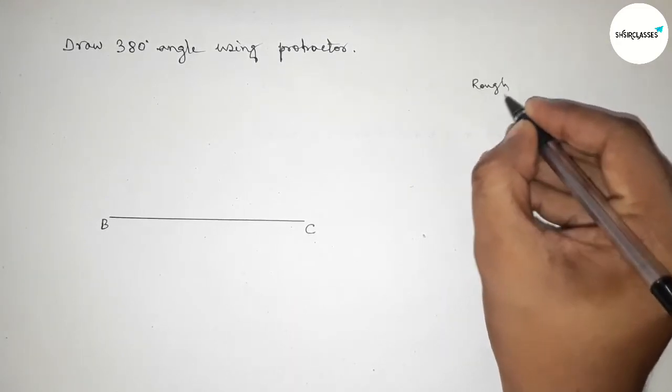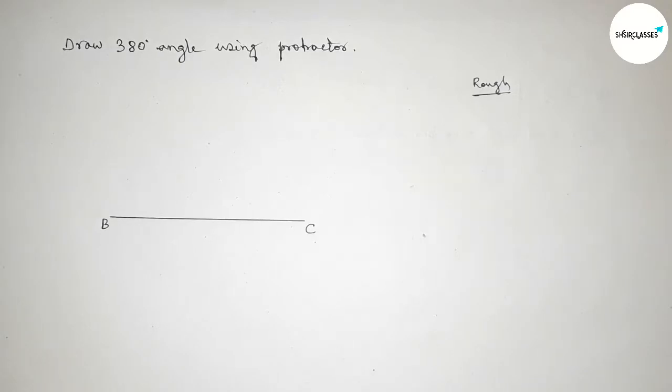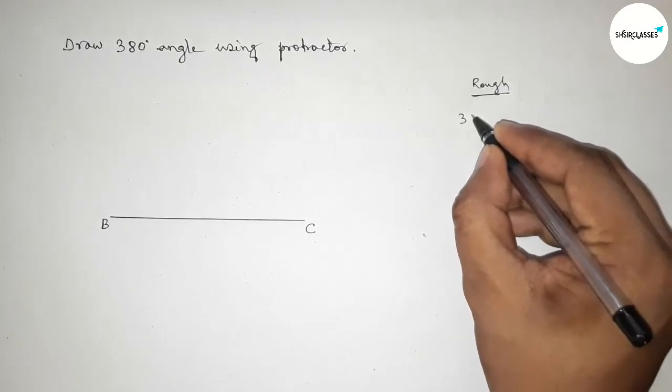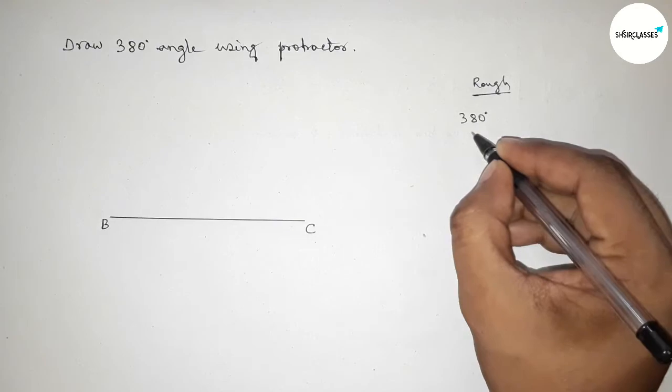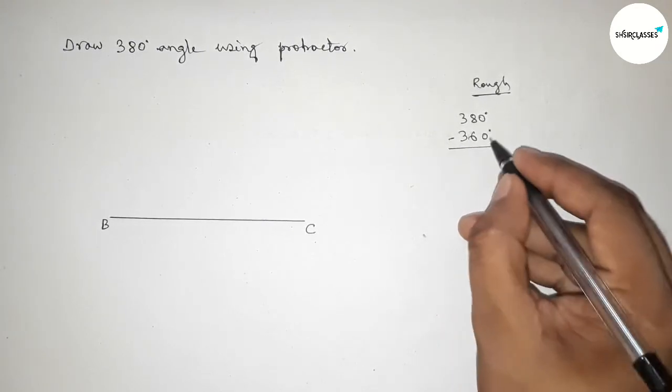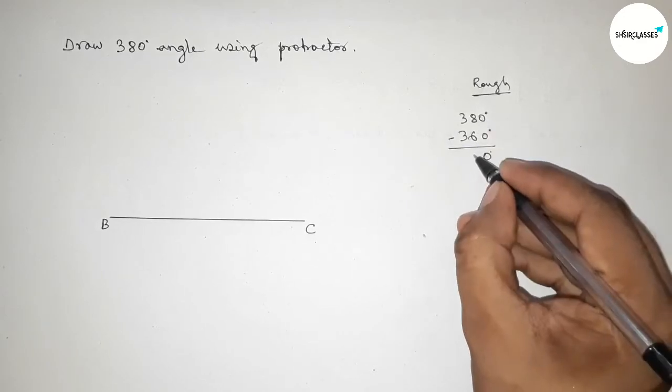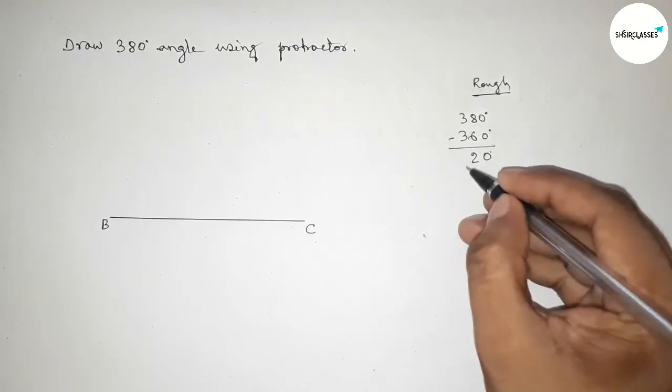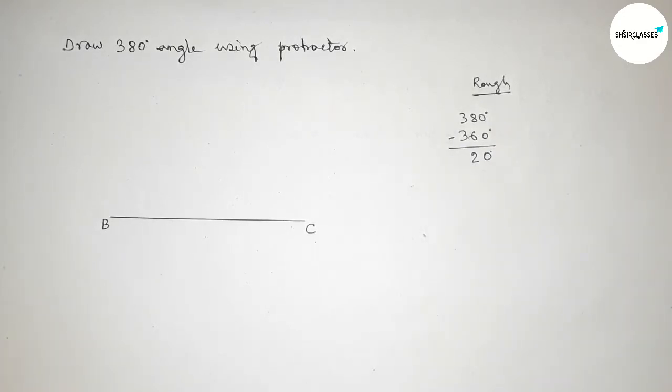Now roughly discussing here some calculation. First, if we subtract 380 degree angle from 360 degrees, so subtracting 380 minus 360, this is 0 and this is 2 and this is 0. So we have to draw a 20 degree angle on the point B by using a protractor by this way.